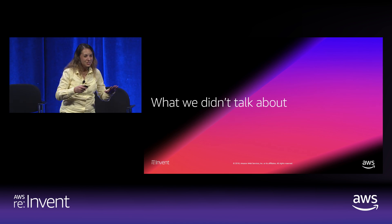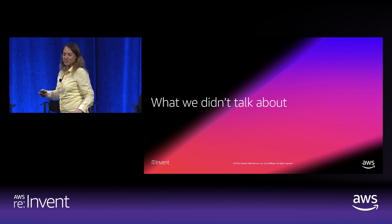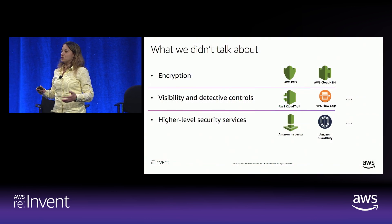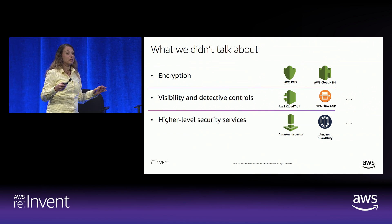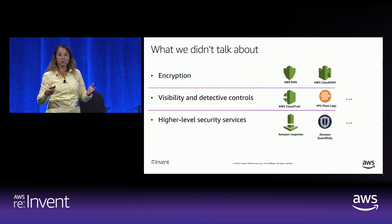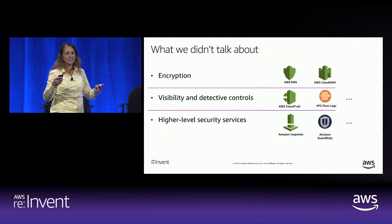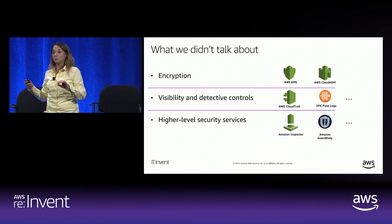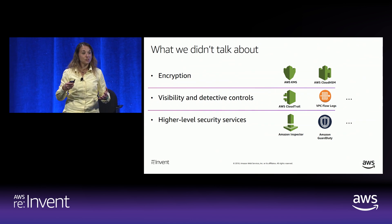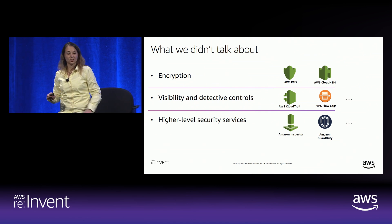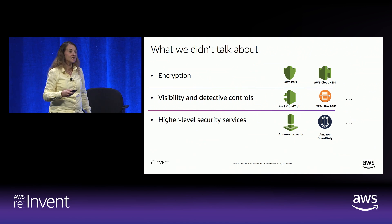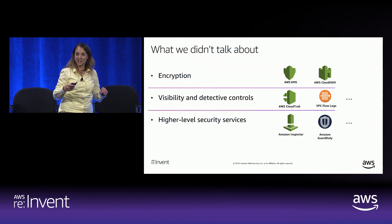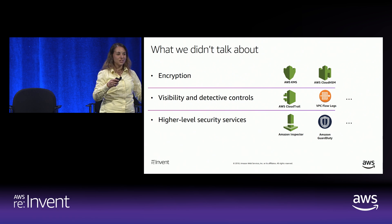We didn't talk about encryption, but of course you should be encrypting your data. AWS makes that easy with KMS — Key Management Service. KMS has fine-grained permission control with IAM, so you can take precise control over who can use the key to encrypt and decrypt under what conditions. KMS also integrates seamlessly with our data services — for many services it's literally choosing the key from a dropdown, and your data is protected with that key.